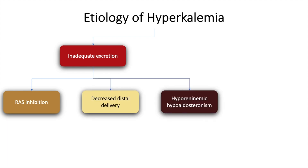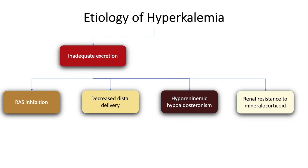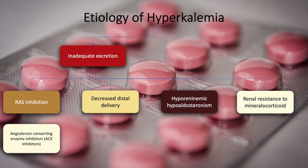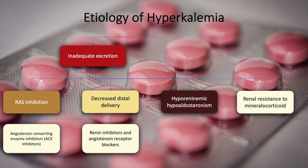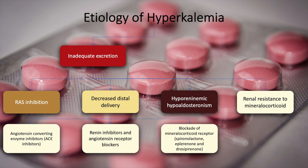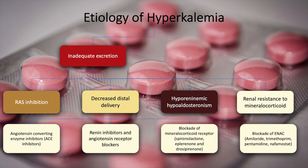RAS inhibition may occur because of ACE inhibitors, renin inhibitors such as aliskiren, and angiotensin receptor blockers. It may also occur because of mineralocorticoid receptor blockers such as spironolactone and eplerenone, and blockade of epithelial sodium channel agents such as amiloride and trimethoprim may also cause hyperkalemia.